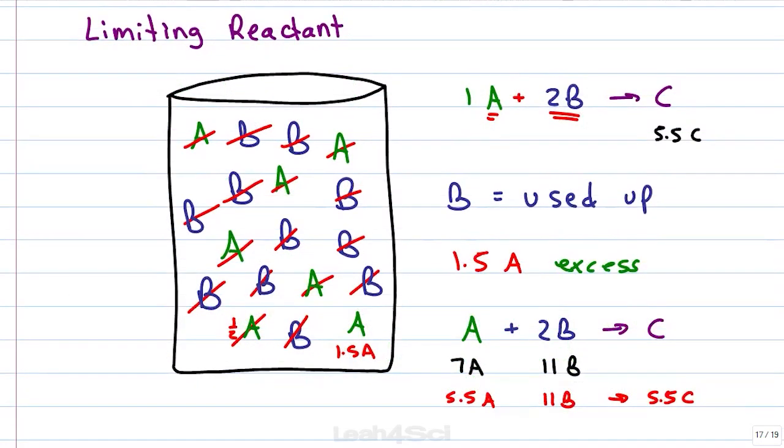In our previous example, because B was used up first, B was our limiting reagent. We had leftover A, that means we had 1.5 excess of A and our yield was 5.5 of our product C. Knowing this, we have 2 ways that we can approach this calculation.